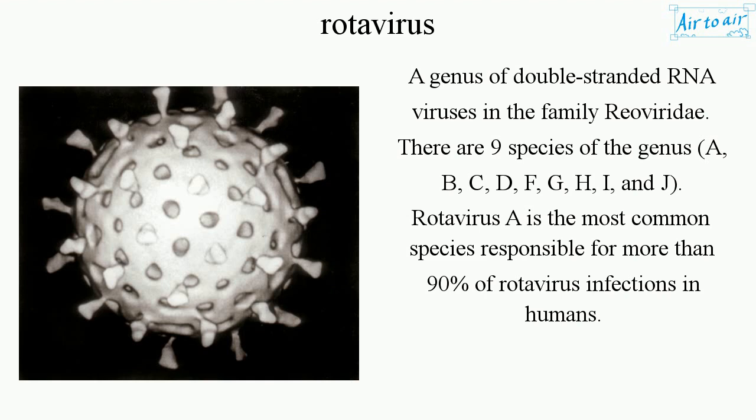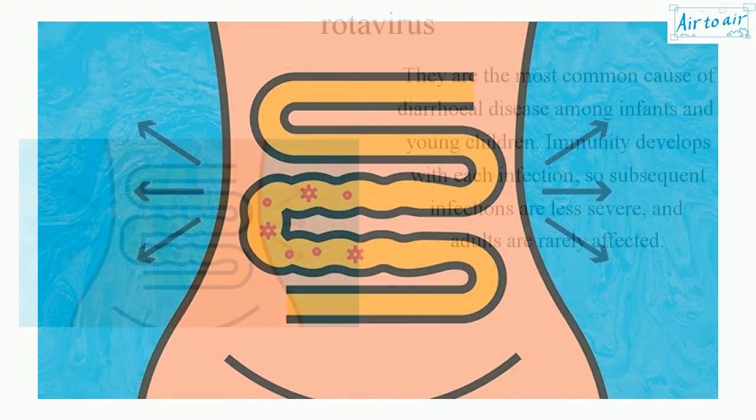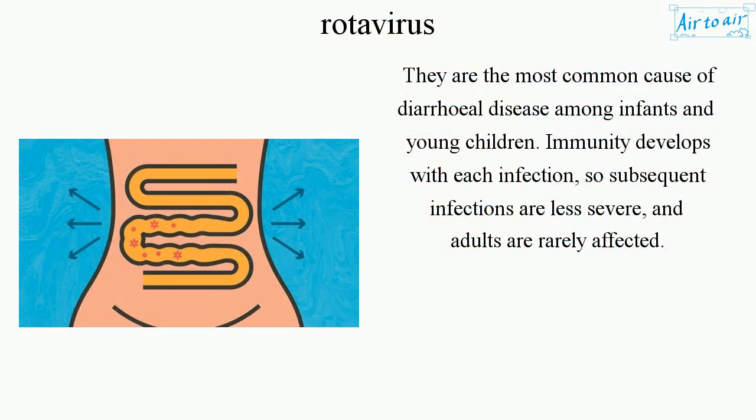Rotavirus A is the most common species, responsible for more than 90% of rotavirus infections in humans. They are the most common cause of diarrheal disease among infants and young children.